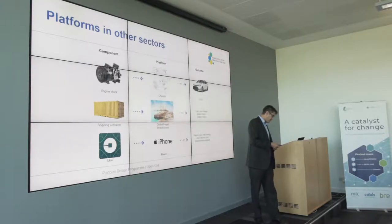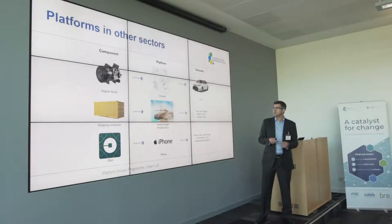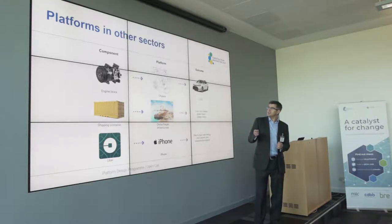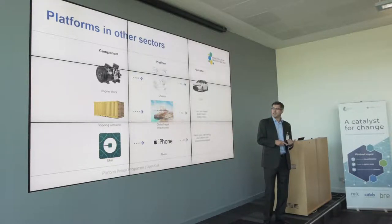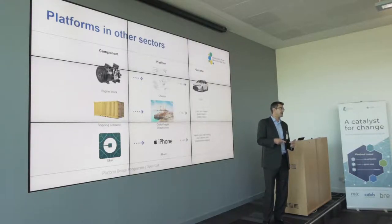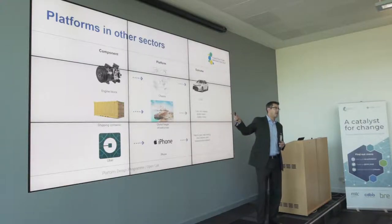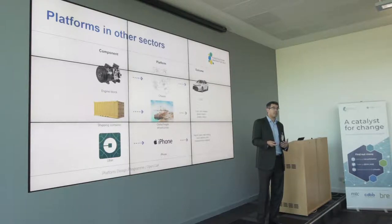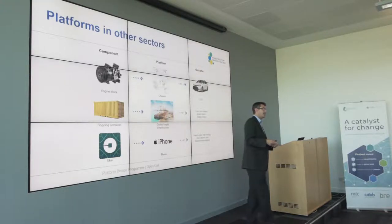Loads of people understand the platform principle in automotive — BMW has a single chassis that every car is built upon. My favorite example is the shipping container. Before 1956, when the intermodal shipping container was invented, shipping was much like construction is now: incredibly inefficient, very labor-intensive, and about a third of the cost of anything was its transportation cost. Supply chains were very short, things didn't go very far, and the economy was very localized. The day the first ship launched, the cost of shipping dropped 93% in a morning.